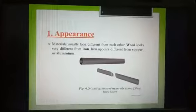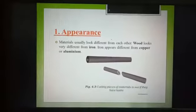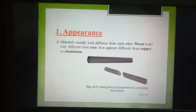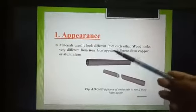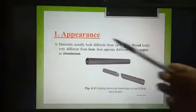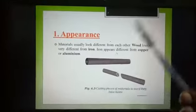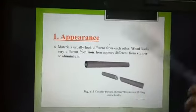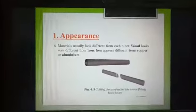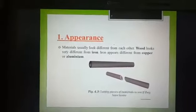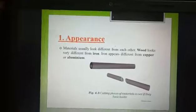Number one is appearance. Appearance means how it looks. Wood is different from iron, iron is different from copper and aluminium. Just look here — this pen is of a different shape and size, a laptop is of a different shape and size, even one person is different from another person. So appearance means how it looks.